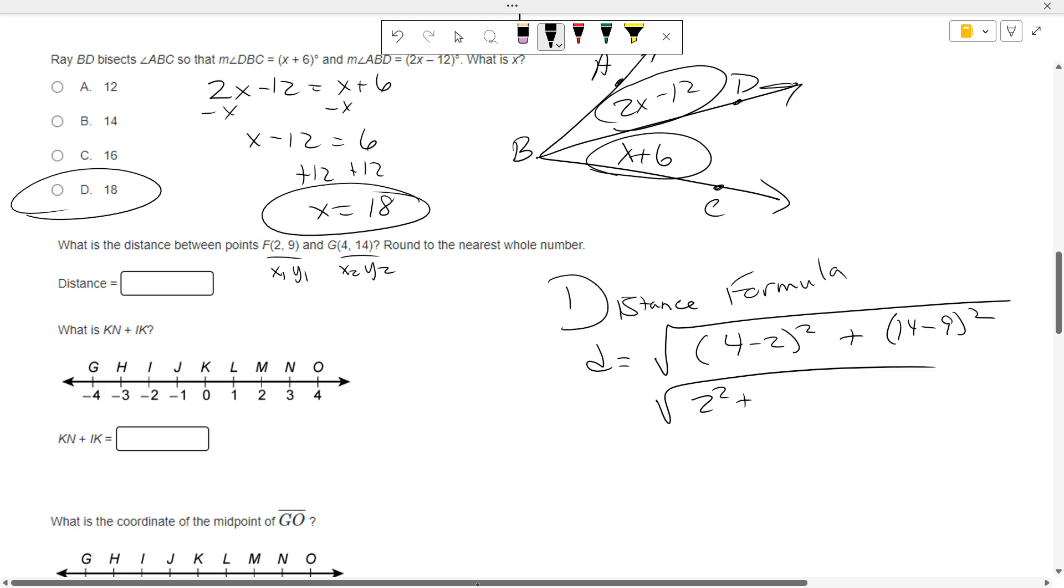Which is 2 squared plus 5 squared. Which is 4 plus 25. Which is the square root of 29. Which is 5 point something. I don't know what that is. Essien, what is it? Square root of 29.